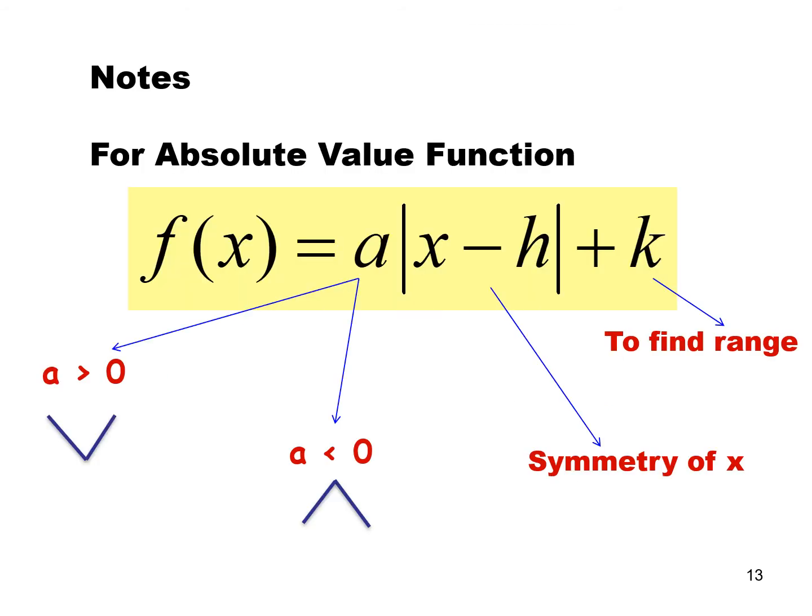We can summarize the absolute value function as f(x) = a|x - h| + k. When a is positive, you get a V-shape; when a is negative, you get an inverted V-shape. The term (x - h) gives a symmetry axis at x = h, and k shifts the graph up or down, which also determines the range.